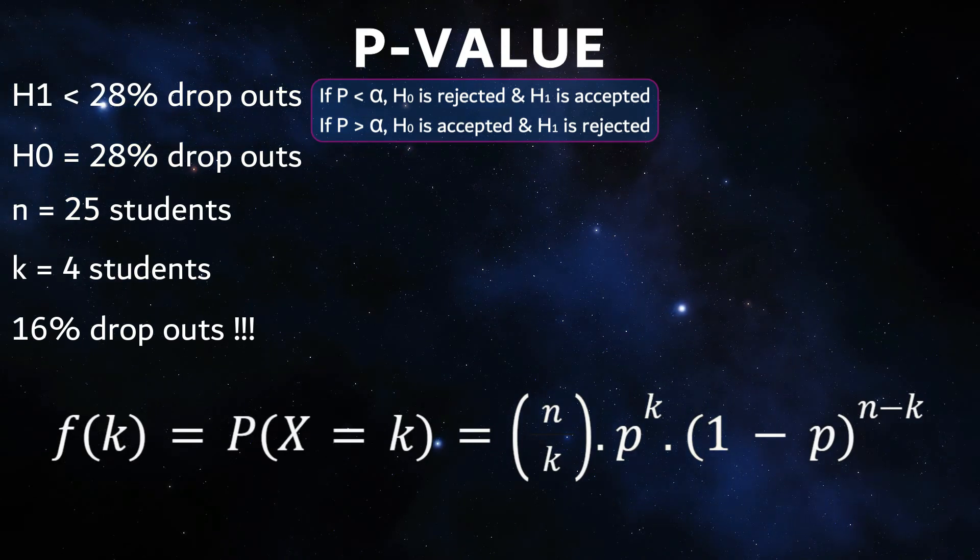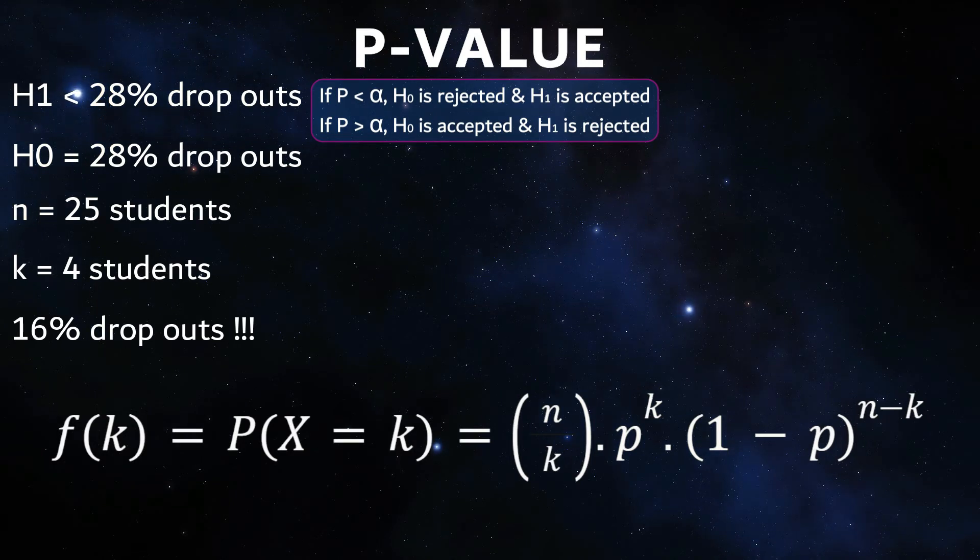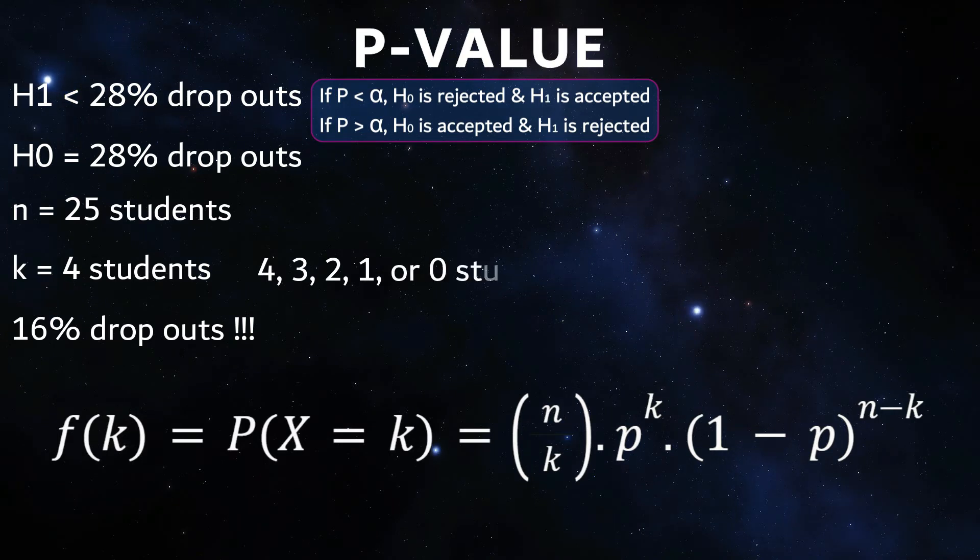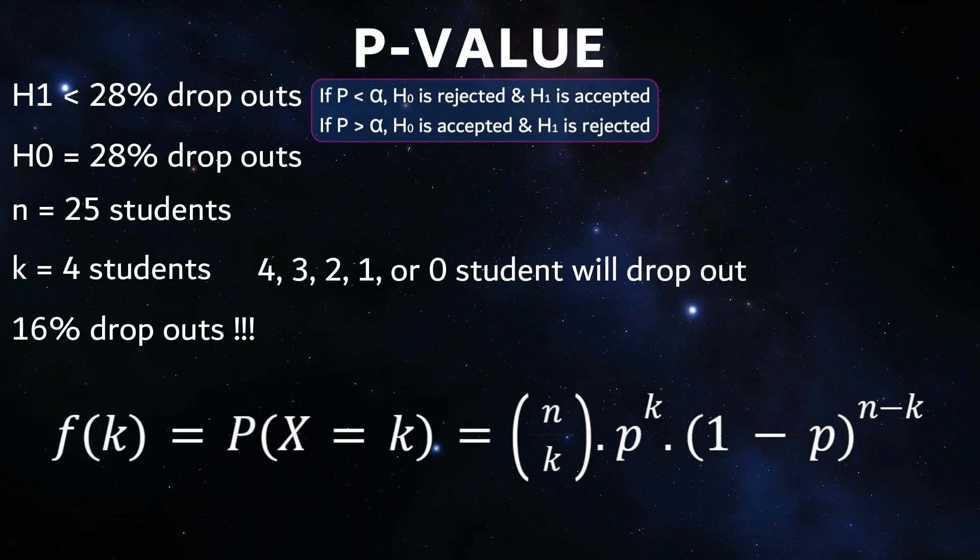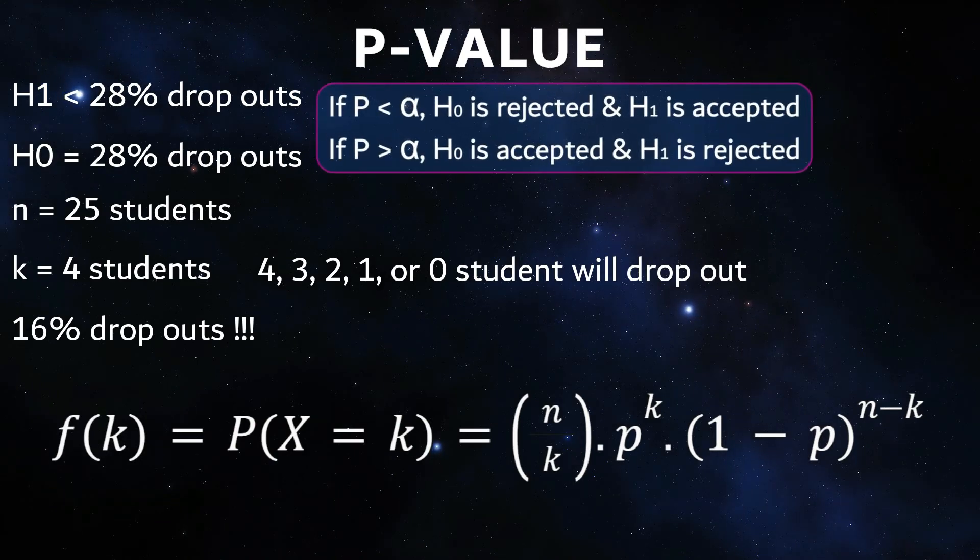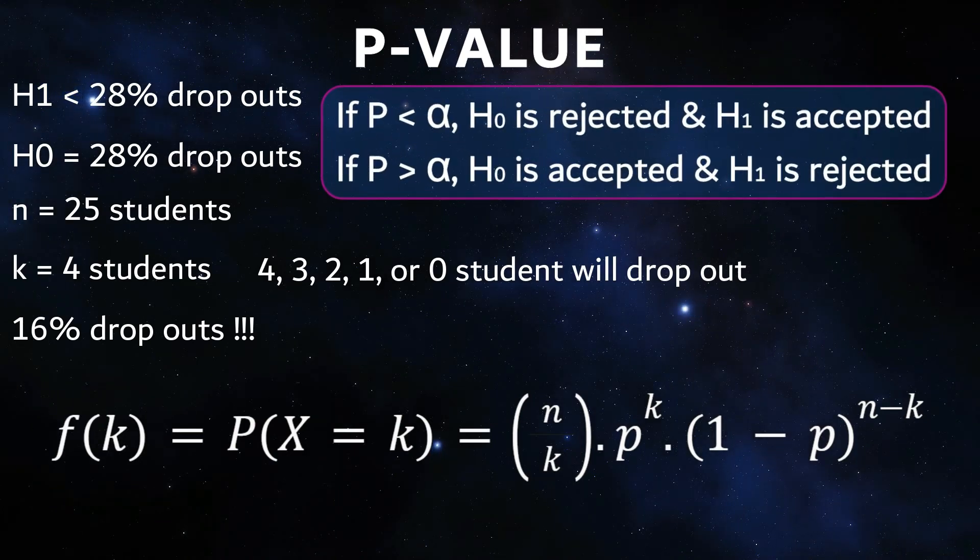Using this function, we now calculate how likely it is that only 4 or fewer students will drop out of college early. These probabilities are then summed up and we get the p-value. If this value falls below the significance level alpha of 0.05, then we can reject the zero hypothesis.